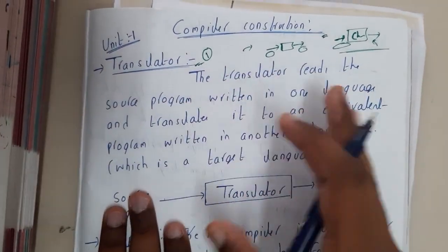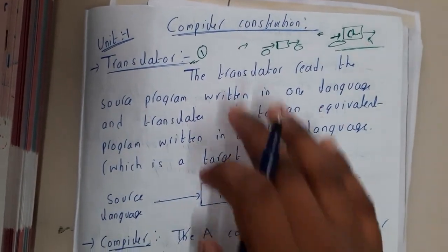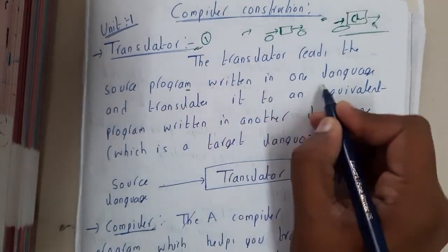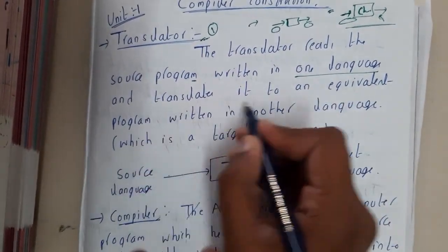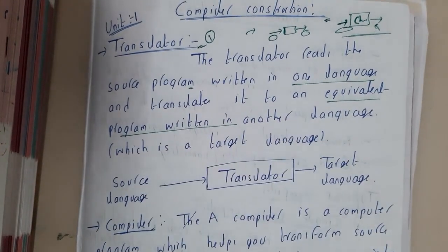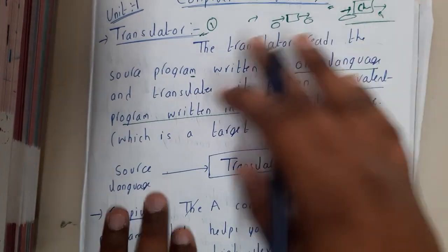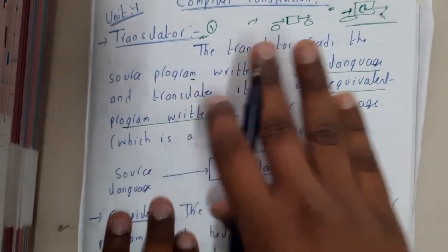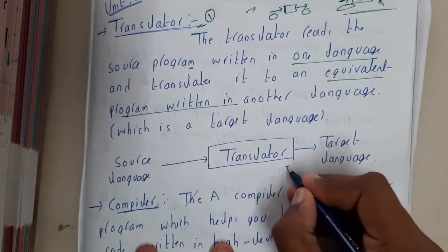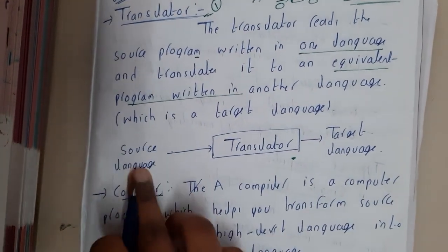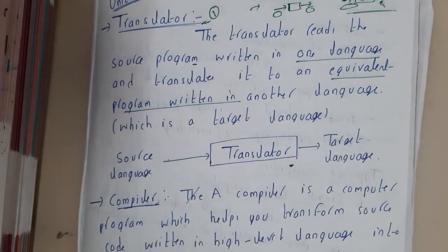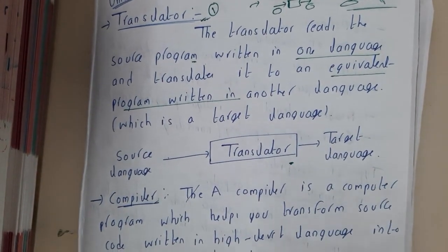So that is the translator's job. The same definition in terms of programming languages is the translator. The translator reads the source program written in one language and translates it into an equivalent program written in another language. We are not defining one as higher level or lower level — it is simply from one language to another. The translator takes the source as input and gives the output as the target code or target language.